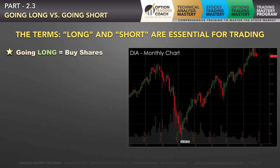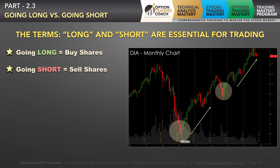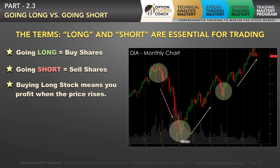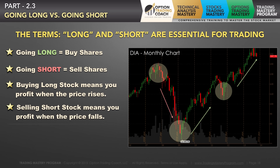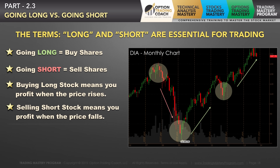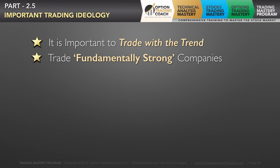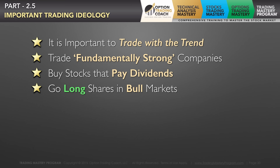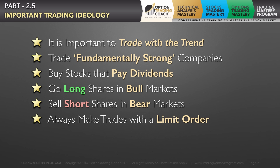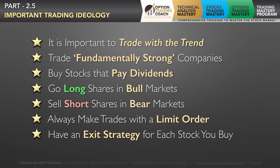Going long means buying shares; going short means you're selling shares. You want to buy long stock when you think the stock will rise, and sell short when you think the opposite. Key principles: trade with the trend, trade fundamentally strong companies, buy stocks that pay dividends, go long in bull markets, sell short in bear markets, make your trades with a limit order, and have an exit strategy for each stock you buy.